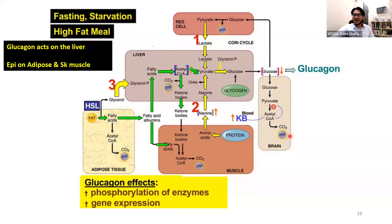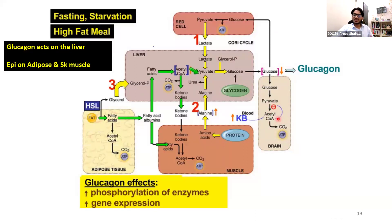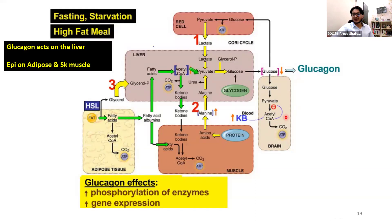Ketone bodies can be made into acetyl-CoA and that can be made into ATP. Importantly, when ketone bodies cross the blood-brain barrier and the brain starts utilizing them, the acetyl-CoA levels in the brain start increasing. This, by feedback inhibition, shuts off the conversion of pyruvate to acetyl-CoA — so it shuts off glucose utilization by the brain. In this way, this is a mechanism your body has developed to save glucose for the red blood cell in prolonged fasting, because the red blood cell has no other option but glucose.